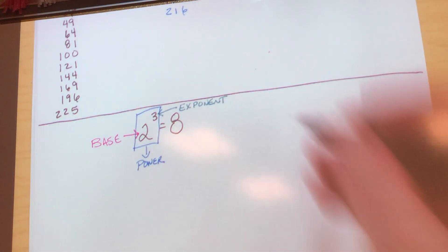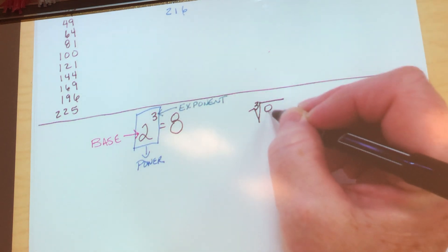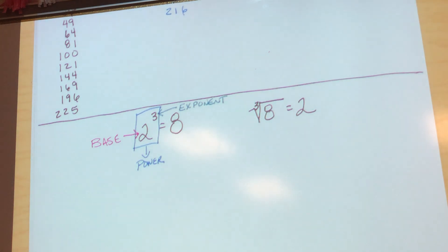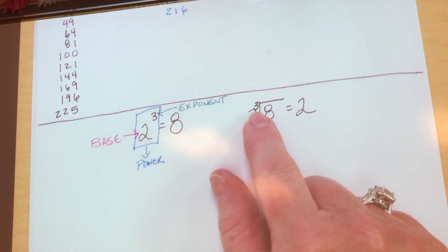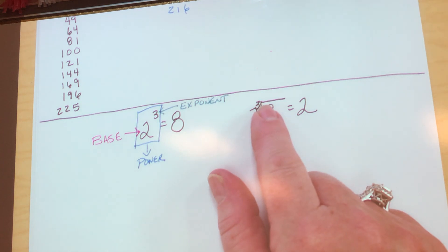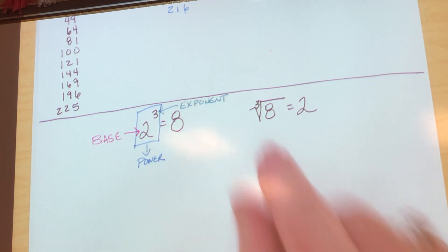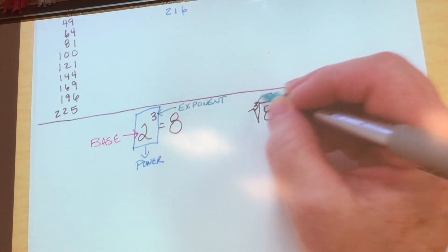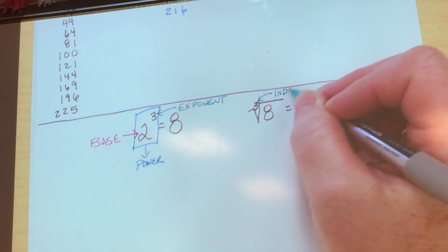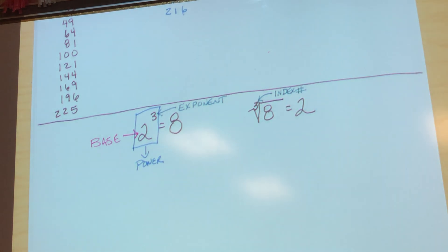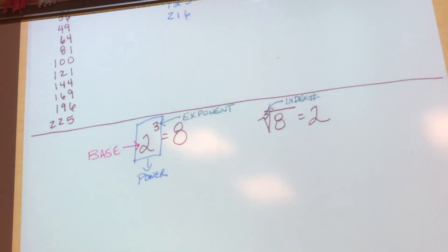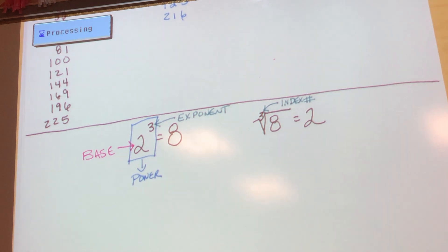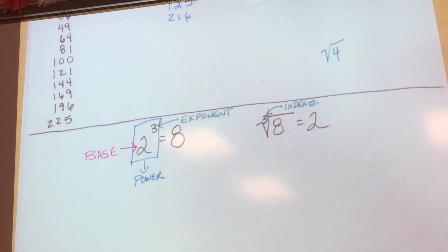Now we're going to go backwards. The cube root of 8 is 2. Notice where that little number sits — it's right inside the V of the radical symbol, not on the stick and not on top. That little number is called the index number, and it tells you what root you're taking. Notice that a lot of the time you don't see an index number — like the square root of 4 is 2. If you don't have a number in there, it's understood to be a square root. If you take any other root, you have to put the index number in.